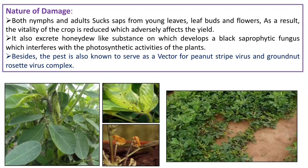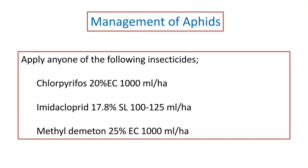Besides feeding, aphids excrete a honeydew-like sugary substance responsible for the development of black sooty mold fungus (Capnodium species) on plant parts, making infested plant parts blackish, directly reducing photosynthetic rate and indirectly reducing yield. Aphids are also active vectors for peanut stripe virus and groundnut rosette virus. For management: use Lecanicillium lecanii, 5% NSKE, neem oil, azadirachtin, coccinellid beetles, and Chrysoperla carnea (green lacewing) as predators.